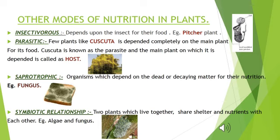Now we are going to learn the various other modes of nutrition in plants. We have learned that plants are autotrophs — they contain chlorophyll in the leaves and make their own food. But what about plants which do not contain chlorophyll and cannot make their own food? There are various types of such plants. The first is insectivorous plants — as the name suggests, these are plants which depend on insects for their food and nourishment. An example is the pitcher plant.